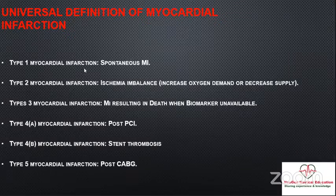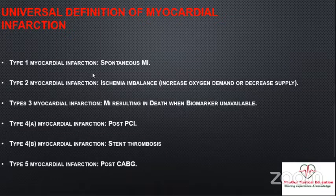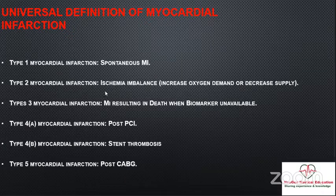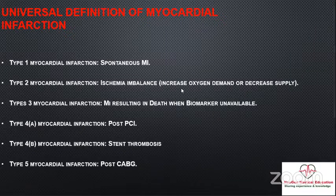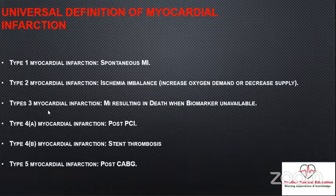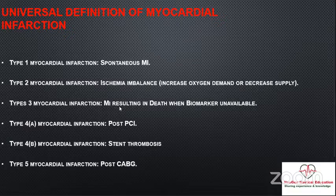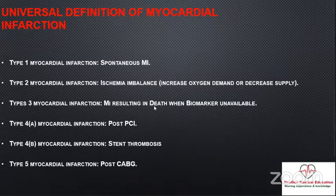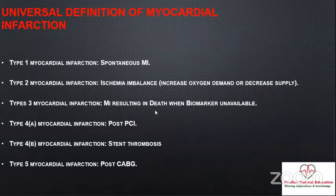Type 1 is myocardial infarction secondary to plaque rupture or atherosclerosis — the most common type we see day to day. Type 2 is MI secondary to increased oxygen demand or decreased supply, with a broad differential diagnosis. Type 3 is a post-autopsy or post-mortem diagnosis, mainly for patients presenting with cardiac arrest thought to be due to acute MI. Types 4 and 5 are mainly related to revascularization procedures.